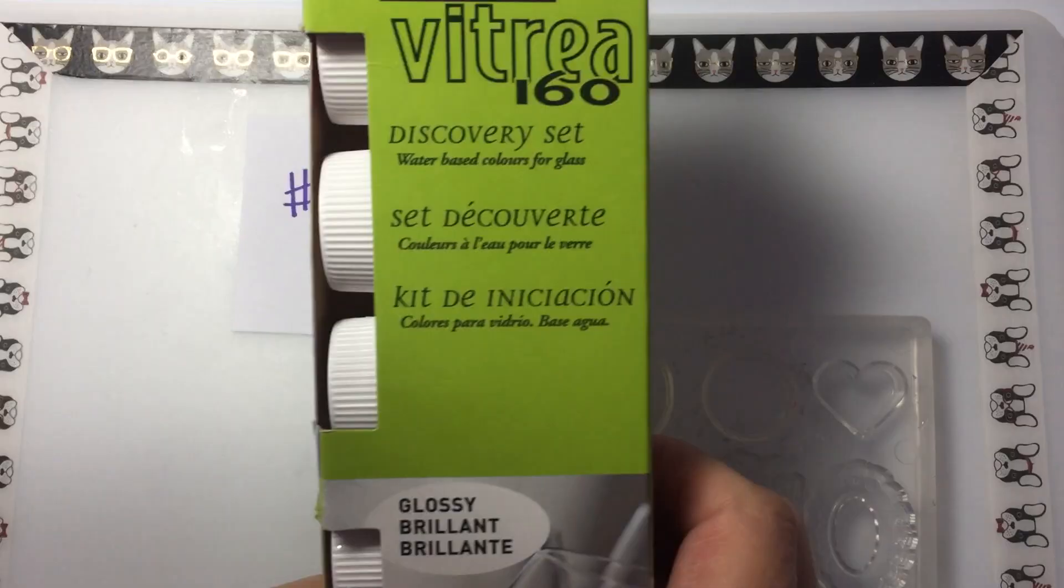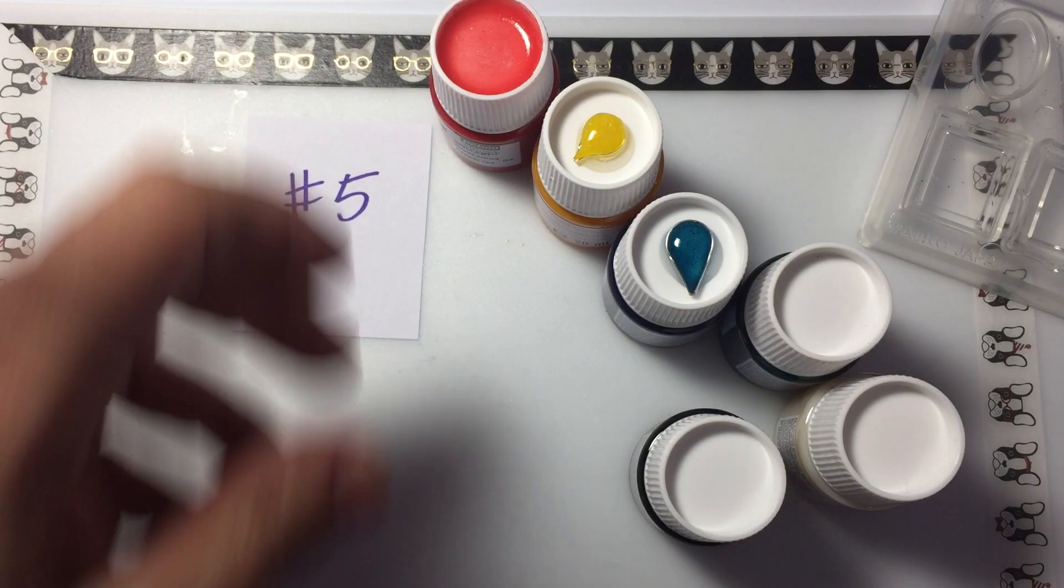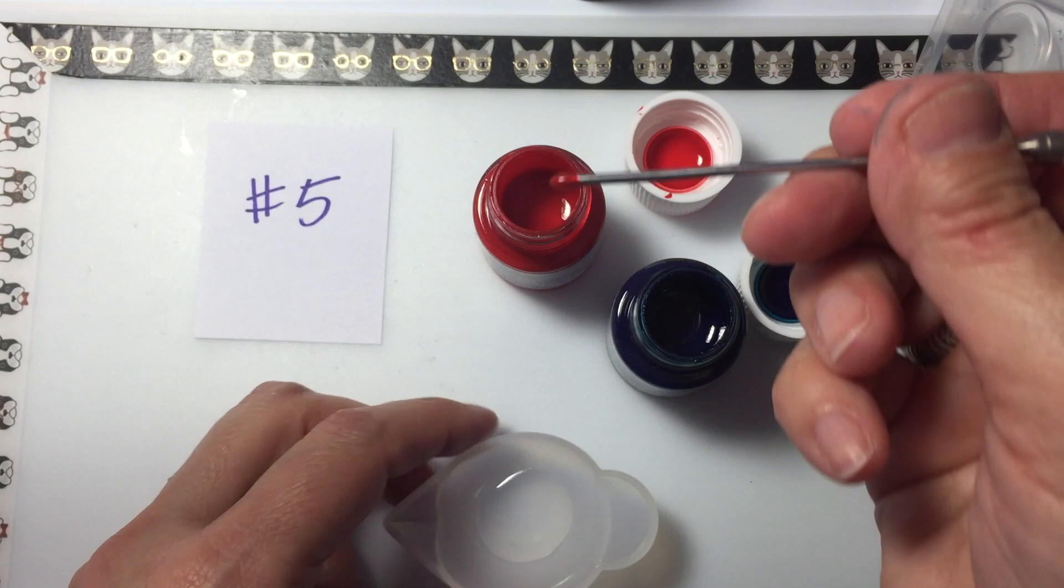The fifth method that I use for coloring resin is glass paints. These are typically used for painting on stemware or for stained glass work. Each color on its own is beautiful. Now when I mix two together to get purple, red and blue, it's not a one-to-one ratio and you're going to see I end up with something that looks a lot like mud.